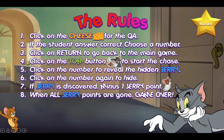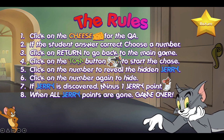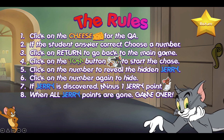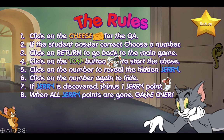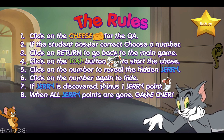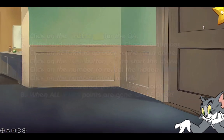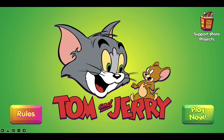You can click on the Tom button to start the chase, and Tom will look for Jerry. If he stops by a number, click on that number to try to find Jerry. If you find Jerry, click on the Jerry below the slide to minus a point, and when all the Jerry's are gone, it's game over. Let's click Return and take a look at the game.